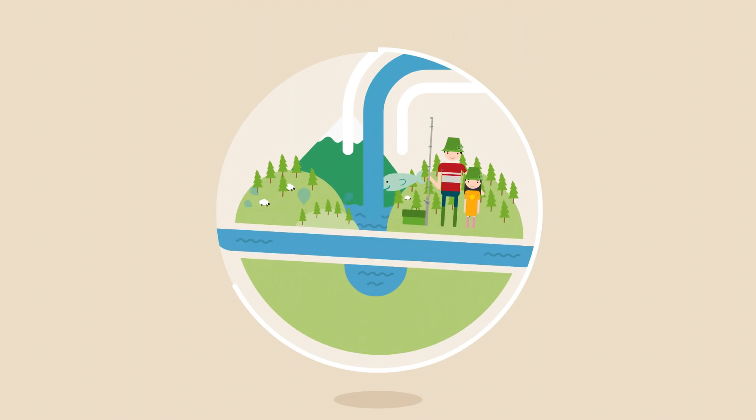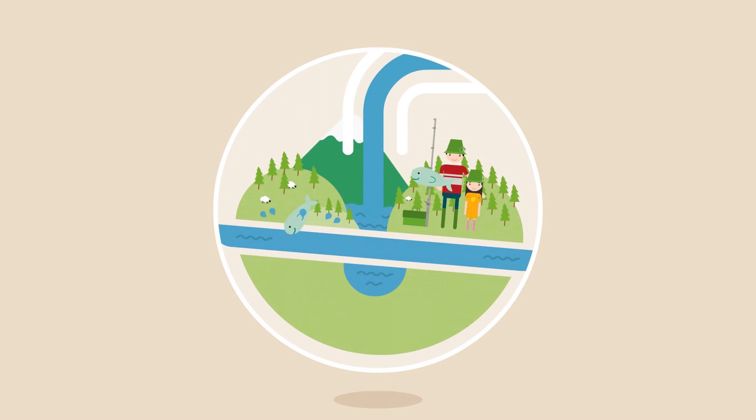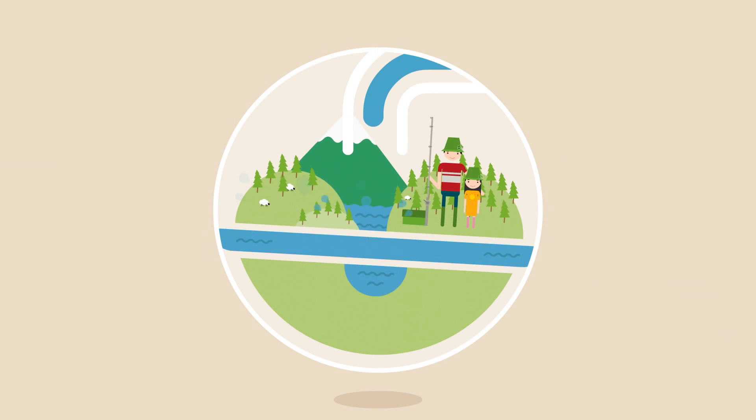Usually, this only happens when there's been heavy rain, so any water that is released into rivers or the sea is very diluted and is unlikely to cause environmental damage.